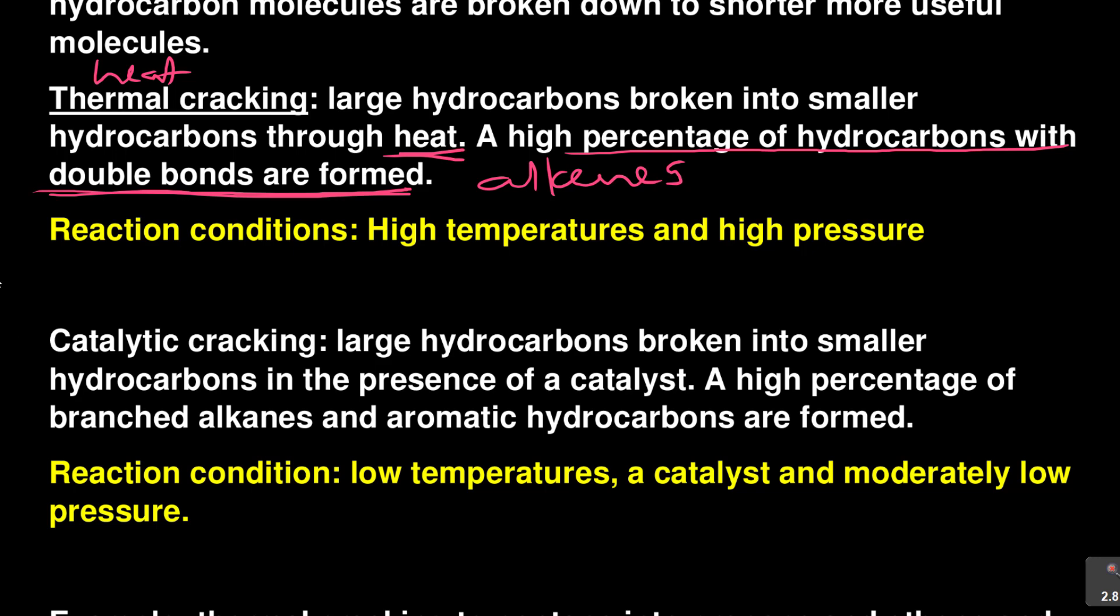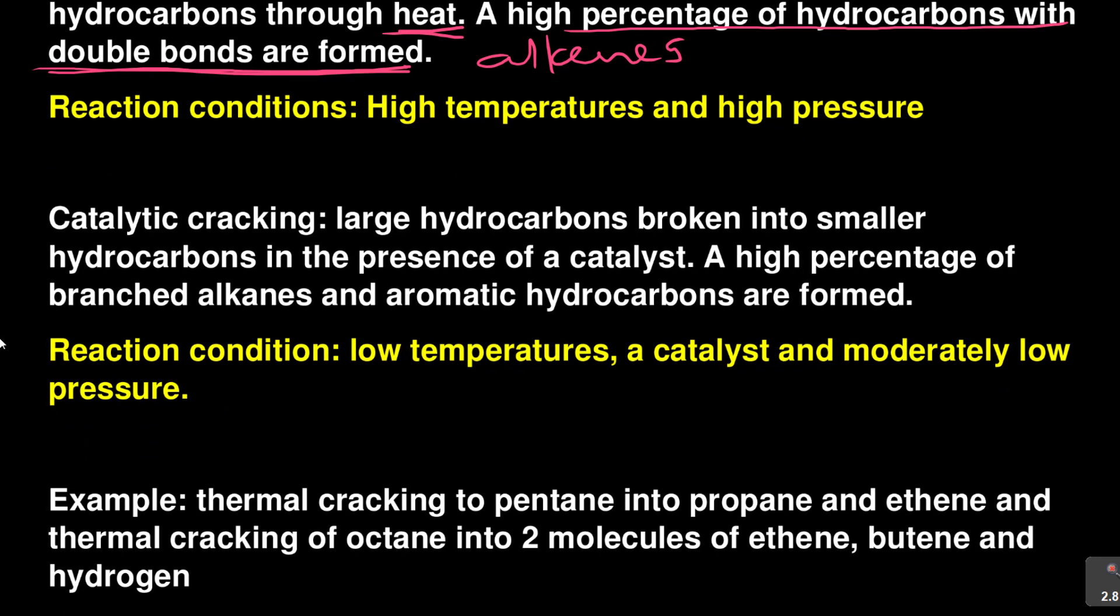The next type of cracking is called catalytic cracking. Large hydrocarbons are broken into smaller hydrocarbons in the presence of a catalyst. A high percentage of branched alkanes and aromatic hydrocarbons are formed. So here you form mainly branched alkanes.